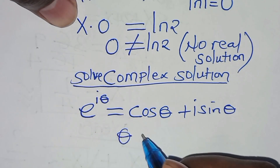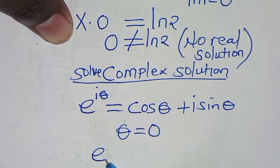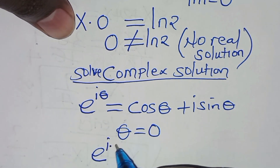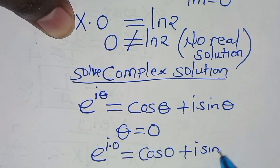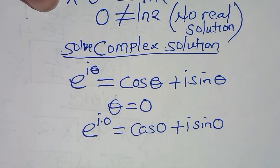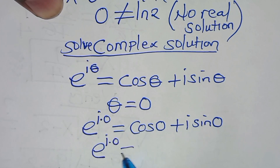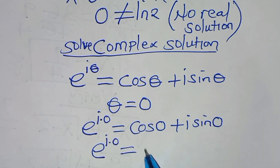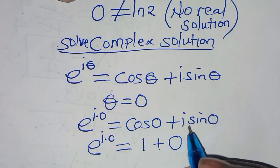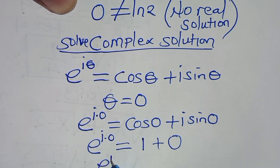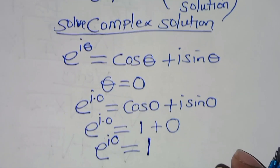Now, when θ is equal to 0, we have that e to the power of i times 0, this is equal to cos(0) plus i·sin(0). We have that cos(0) is 1, and i·sin(0) is 0. So this implies that e to the power of i·0 is equal to 1.